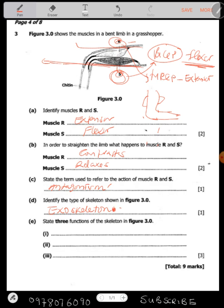State three functions of the skeleton shown there. An external skeleton or exoskeleton protects the body against harm, protects the internal organs. Second function is movement. Third, body posture, because of the skeletal balancing.